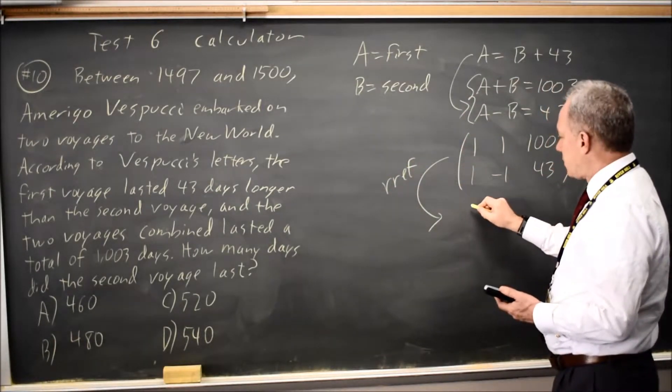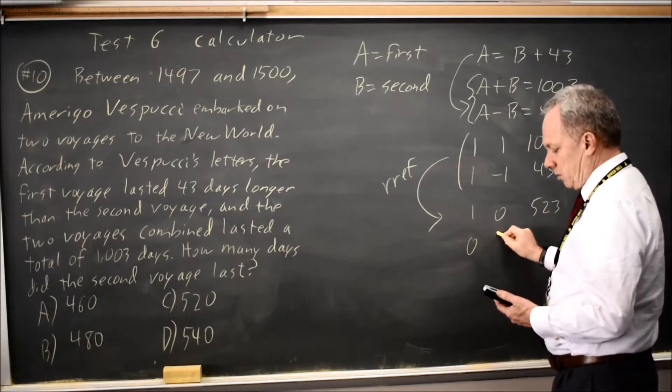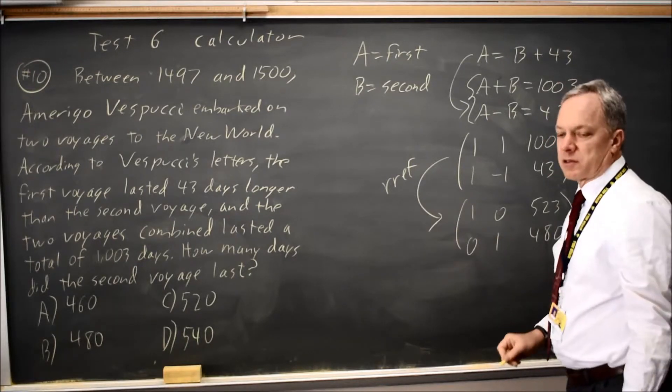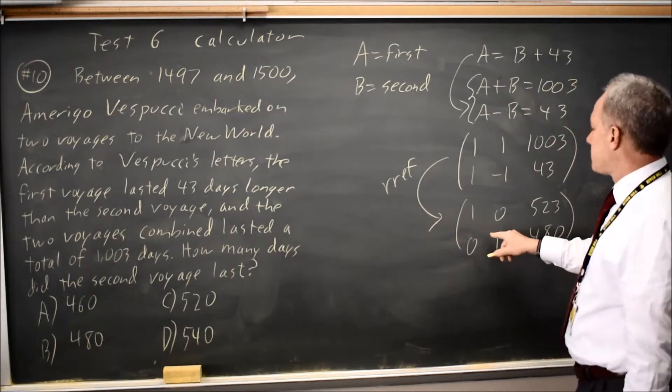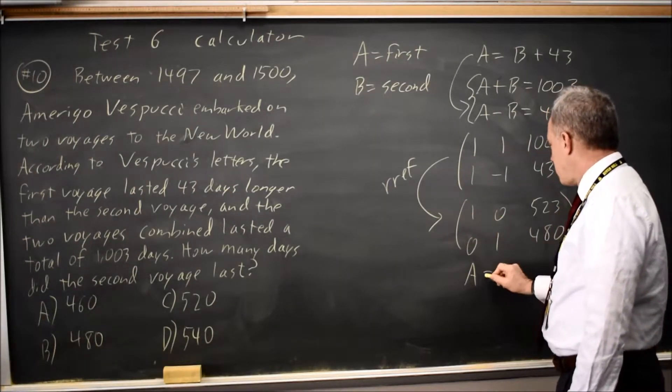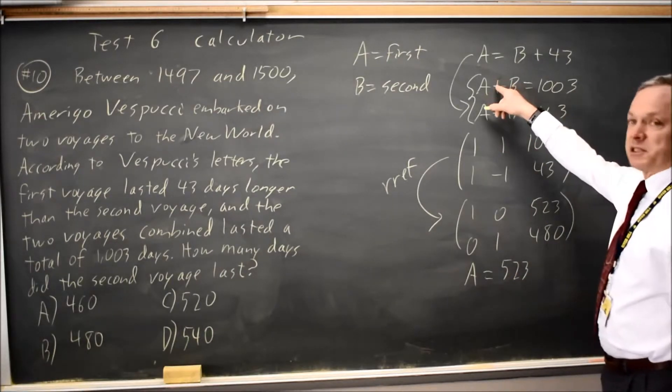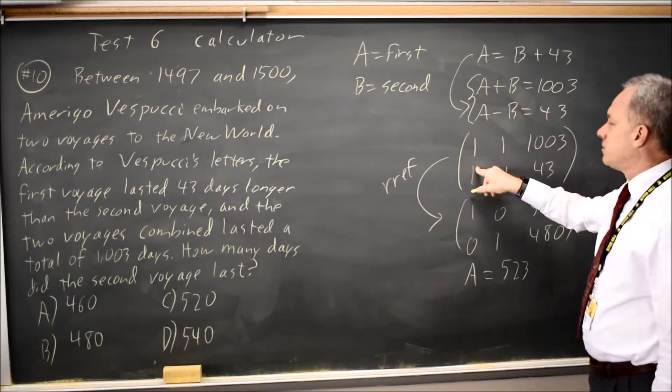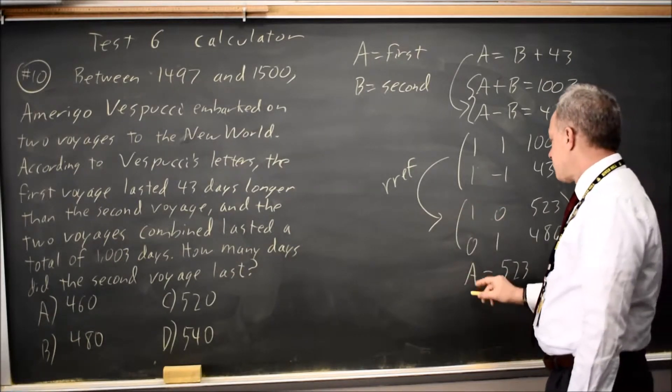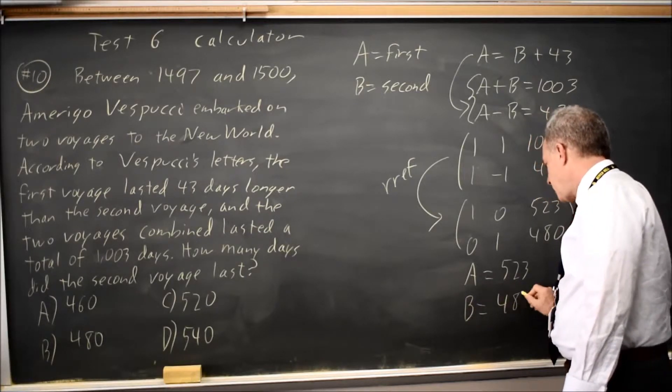My calculator will say 1, 0, 523, 0, 1, 480, and this matrix is equivalent if I rewrite this as a system where this is 1 times A plus 0 times B equals 523. Basically, undoing what I did to go from this system to a matrix, I'm undoing that to go from the matrix back to a system. This is 0A plus 1B, which is just B equals 480.